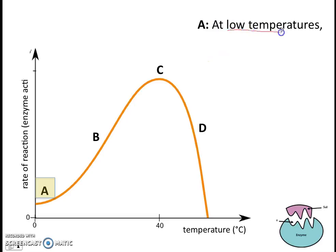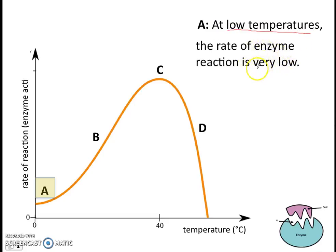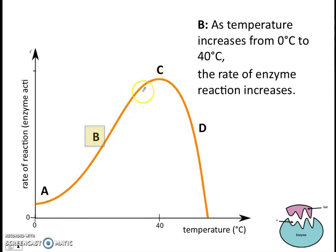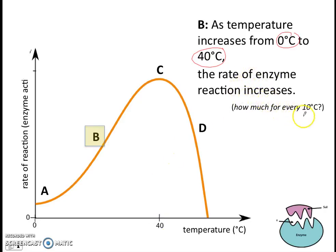At section A, at low temperatures, the rate of enzyme reaction is also very low. Moving to section B: as temperature increases from 0°C to 40°C (the optimum temperature in this case), the rate of enzyme reaction also increases. It's important to include data values when describing your graph. As a guide, for every 10°C rise, the rate of enzyme reaction usually increases by about 2 times.